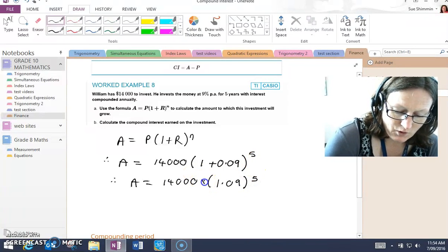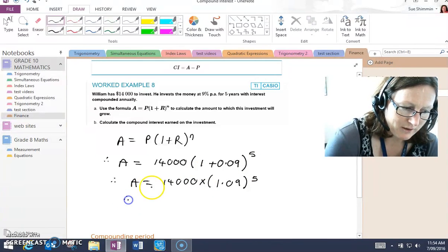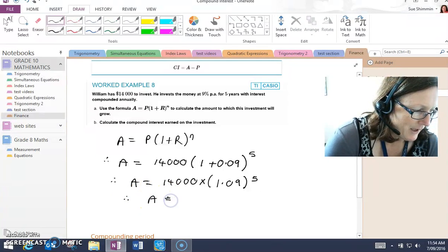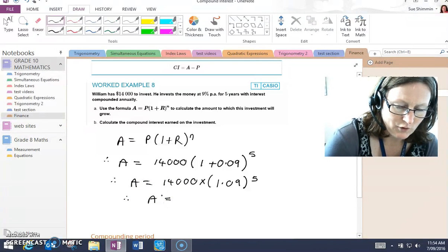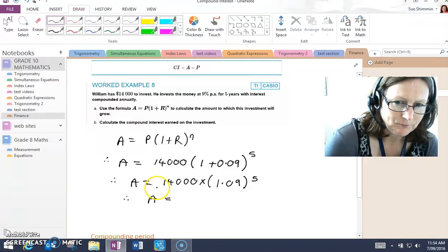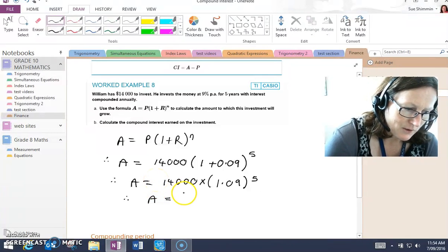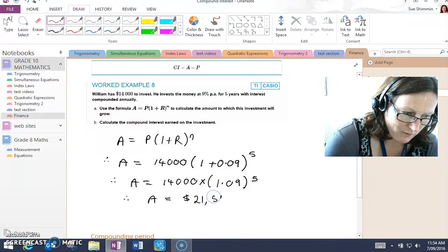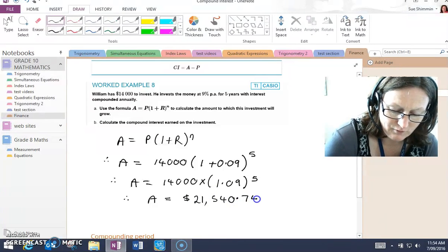Remember to use brackets when that goes into your calculator. A, being the amount of future value, so by William putting $14,000 in under these conditions, the investment will grow to $21,540.74.